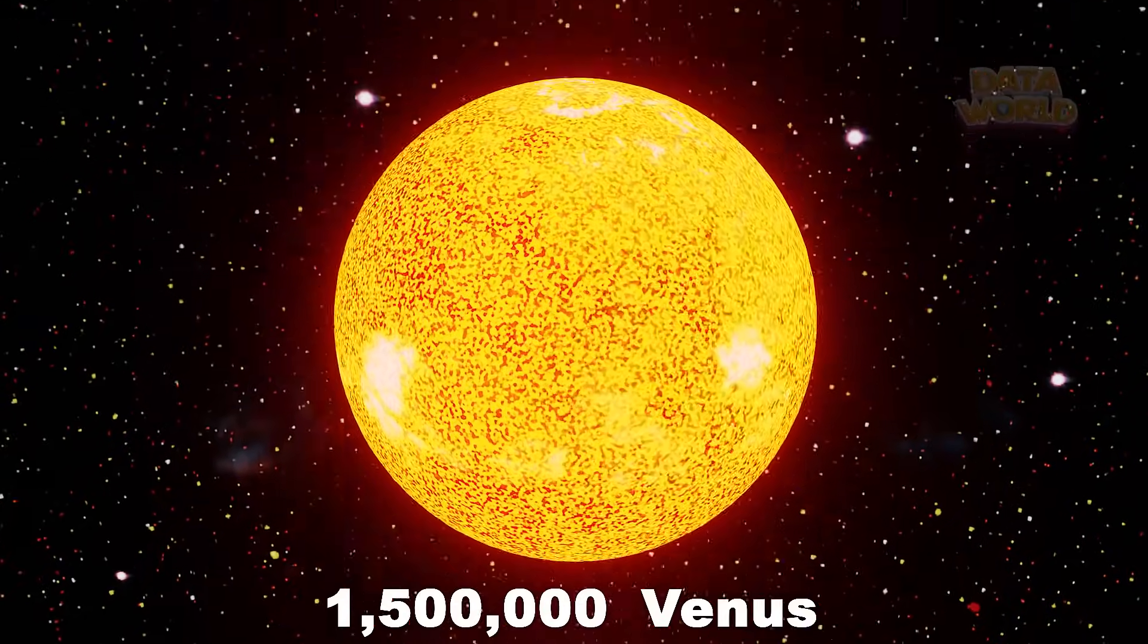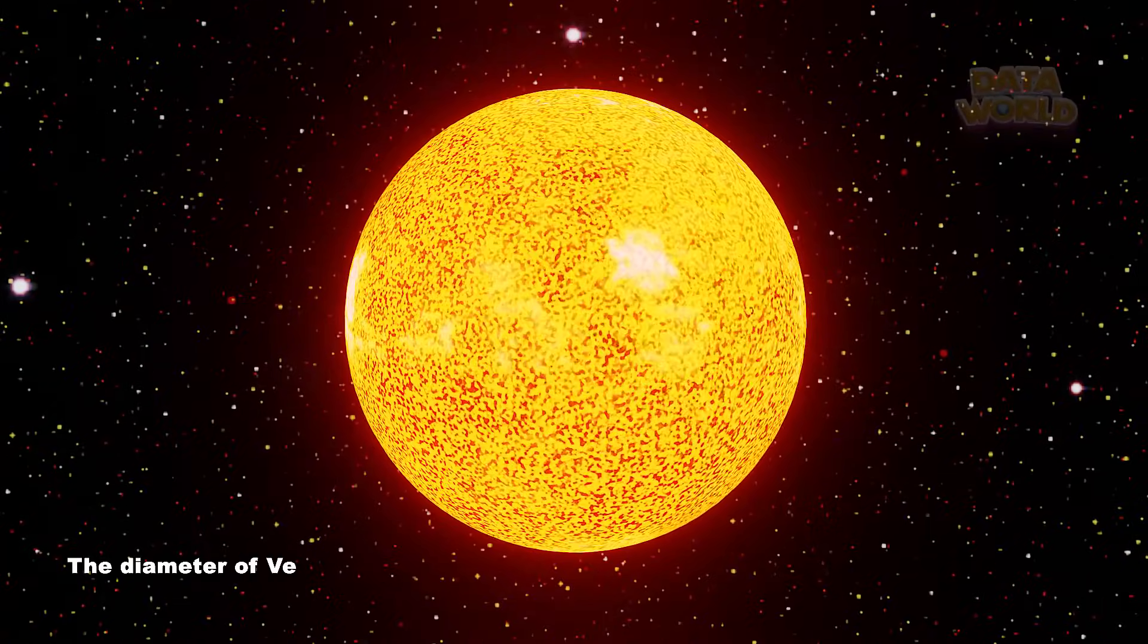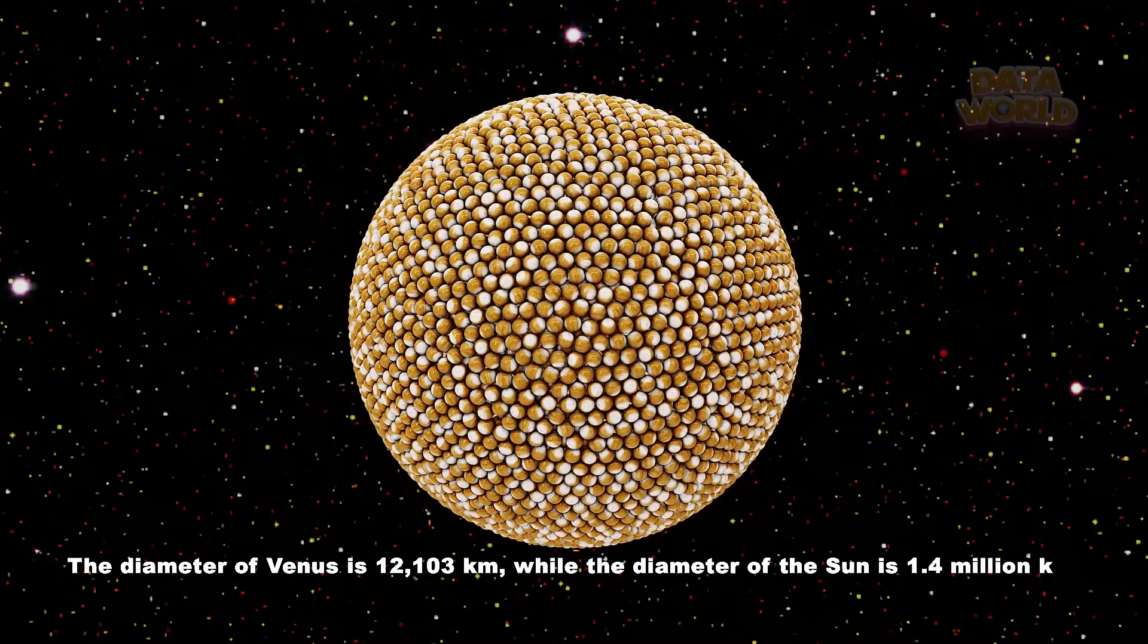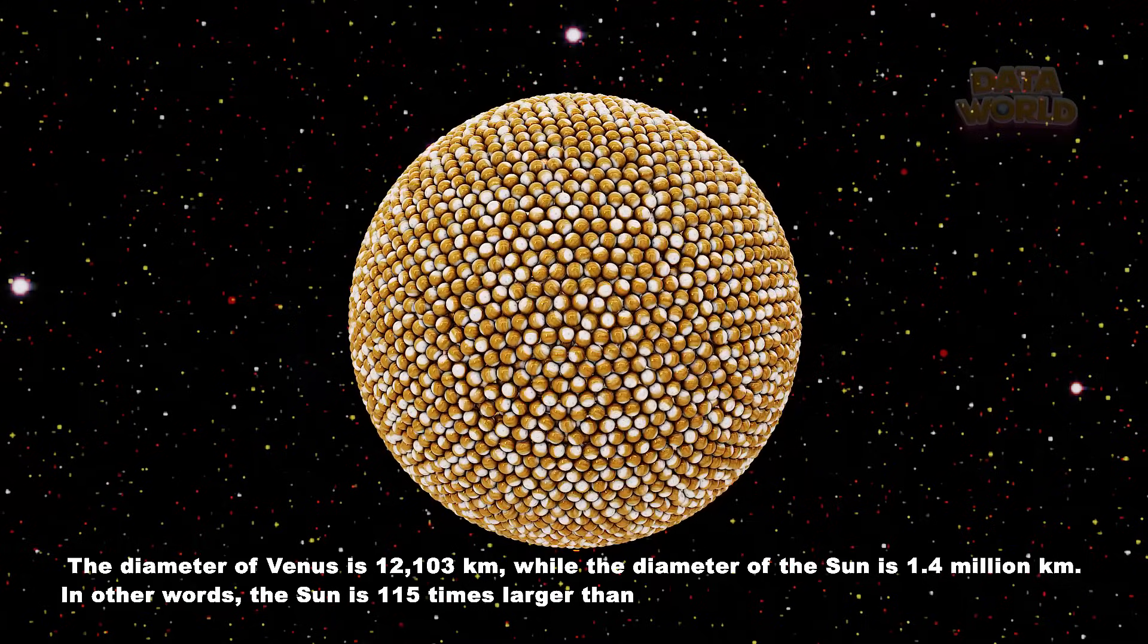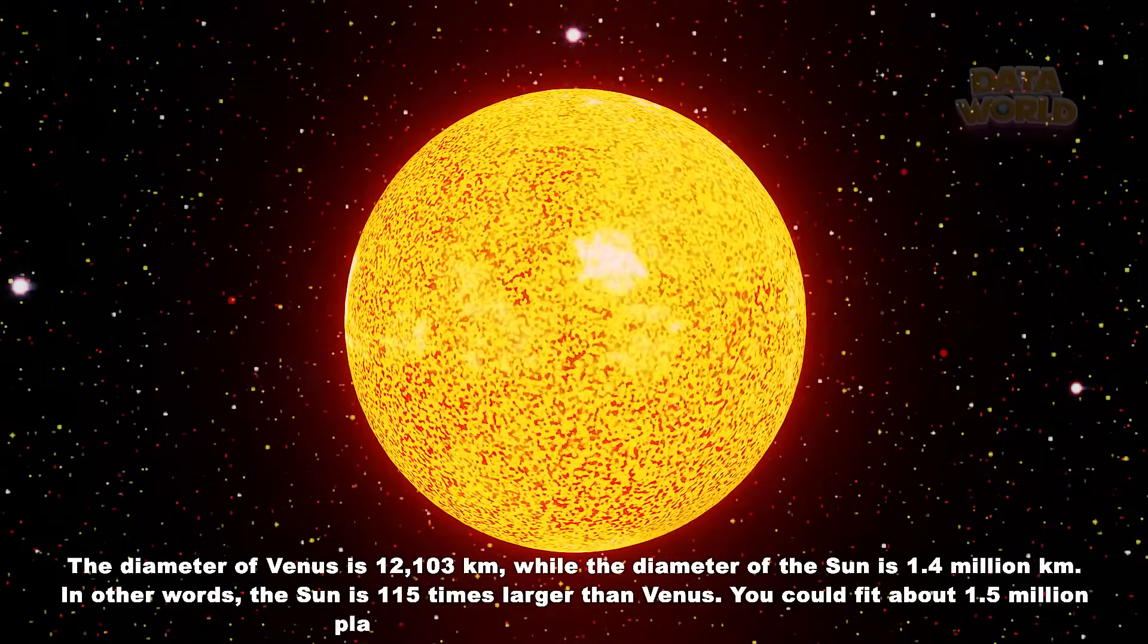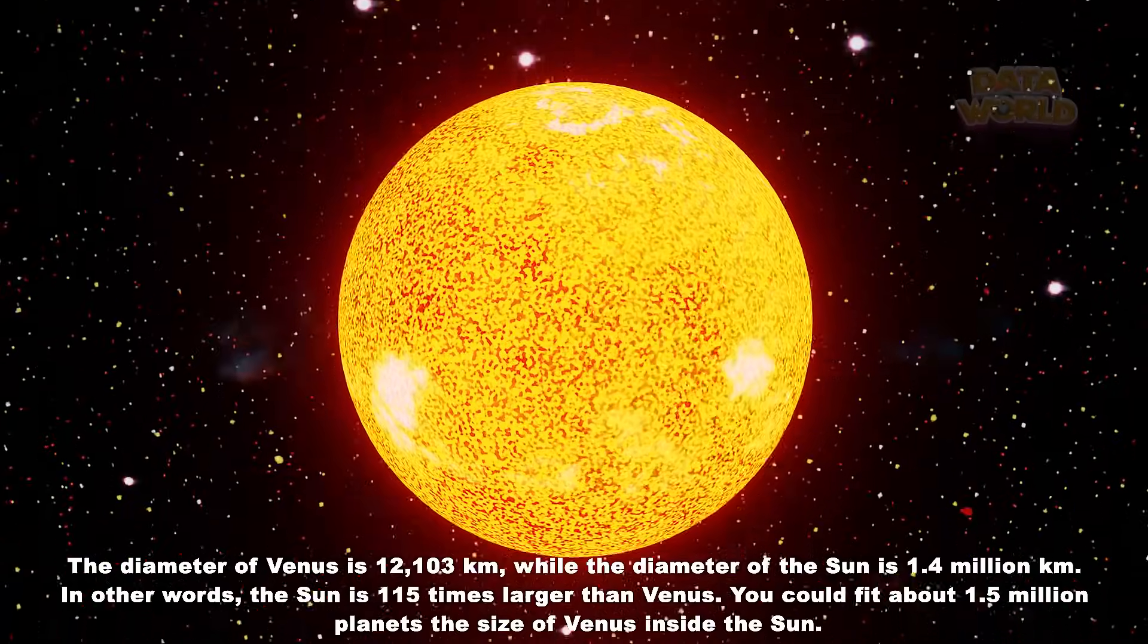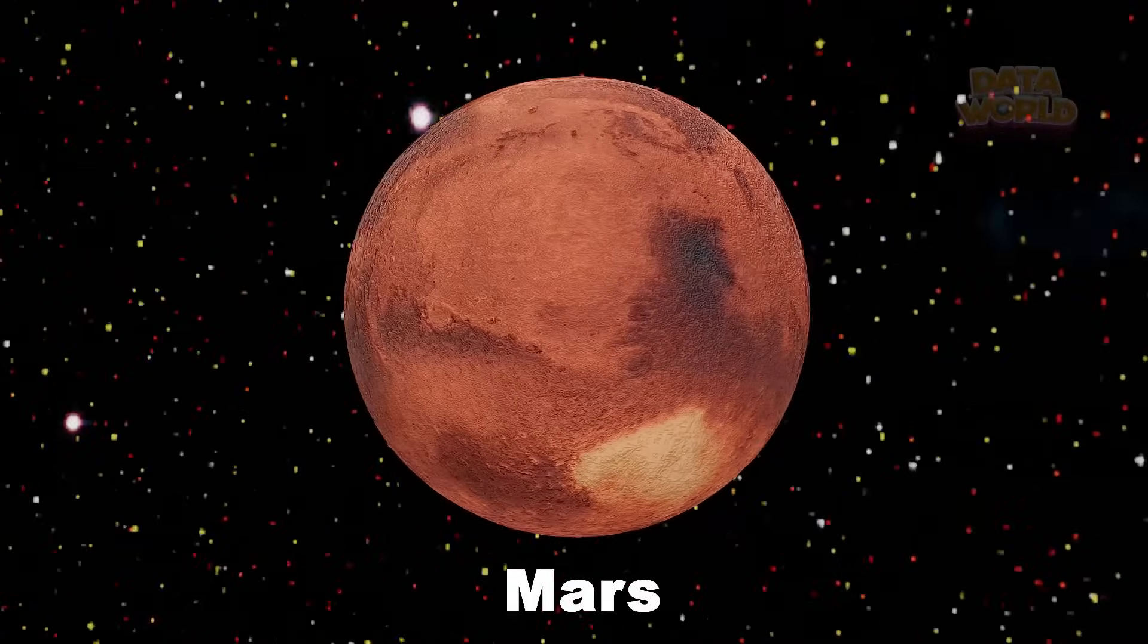1.5 Million Venus. The diameter of Venus is 12,103 kilometers, while the diameter of the Sun is 1.4 million kilometers. In other words, the Sun is 115 times larger than Venus. You could fit about 1.5 million planets the size of Venus inside the Sun.